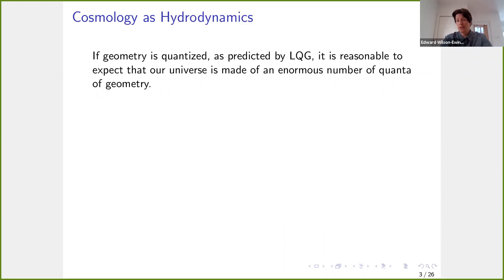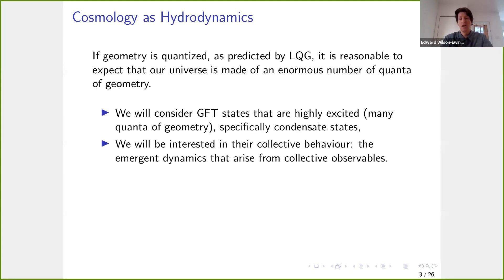Coming from the perspective of group field theory and loop quantum gravity, we have these predictions that geometry is quantized, and we have quantum geometry that you can glue together to create a spacetime. From this perspective, it's reasonable to expect that our universe is made of an enormous number of quantum geometries. So I'll look at GFT states that are highly excited — states that have many quantum geometries, or in the QFT language, many-particle states — focusing on condensate states. We'll be interested in the collective behavior of these states, specifically the emerging dynamics that arise from collective observables.